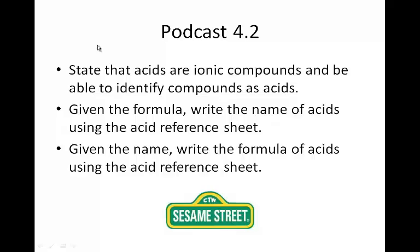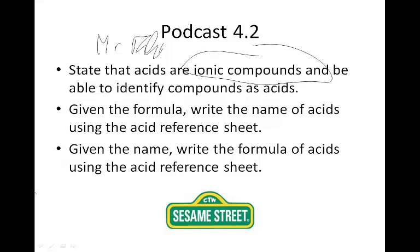Hi everybody, this is Mr. Folly maybe, and welcome to podcast 4.2. What we're going to learn today is that acids are ionic compounds, which means they're made out of ions. We'll identify compounds as acids, given the formula write the name of the acids using the reference sheet, and given the name write the formula of acids using the acid reference sheet.